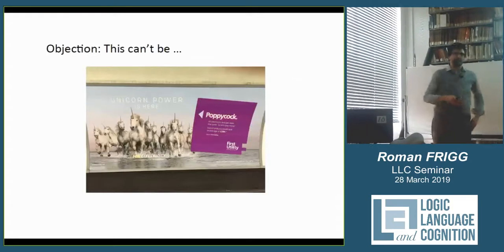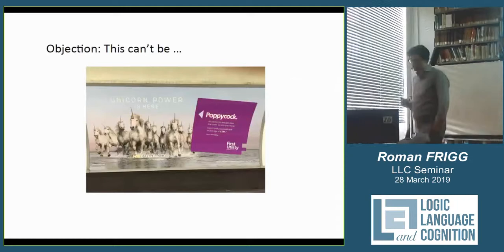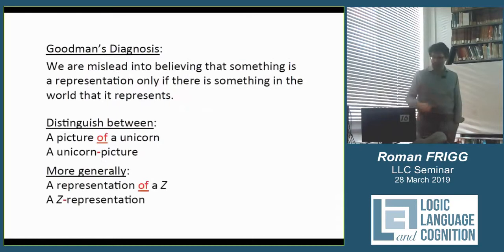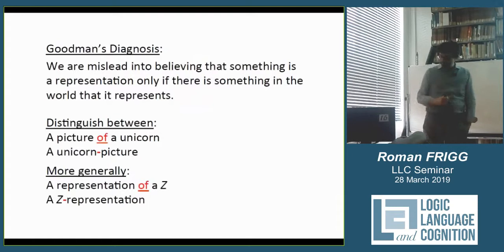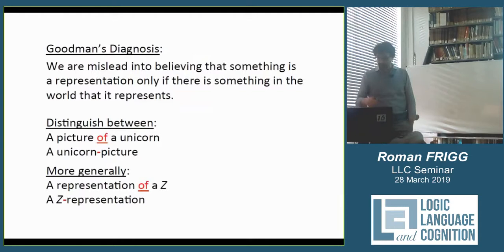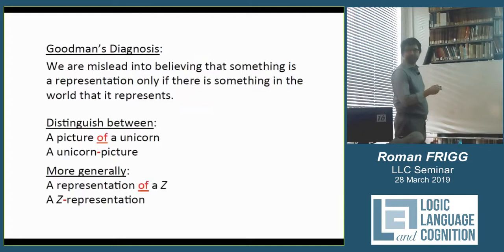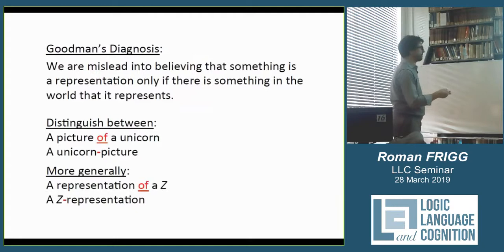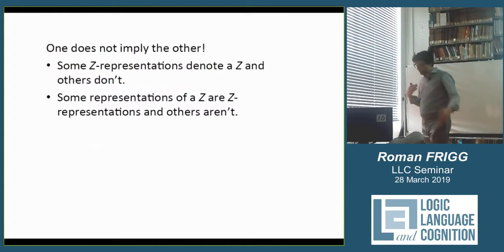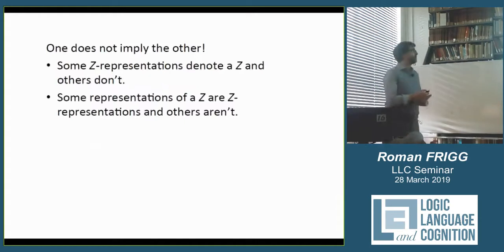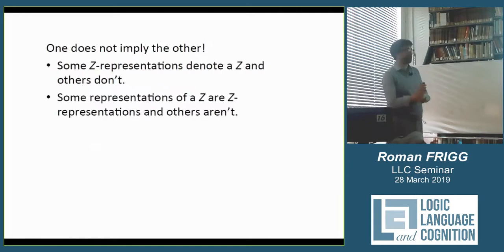Goodman's diagnosis is that we are misled into believing that something is a representation only if there is something in the world that it represents. He distinguishes between a picture of a unicorn and a unicorn-picture. That hyphen is important — it's an unbreakable predicate: a unicorn representation. More generally, a representation of a Z and a Z representation have to be distinguished. These are two different concepts, and one does not imply the other. Some Z representations denote the Z and others don't. Some representations of a Z are Z representations and others aren't.